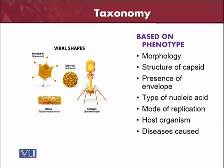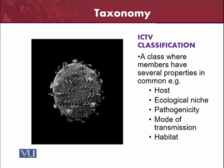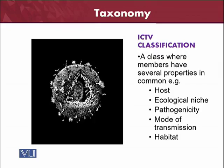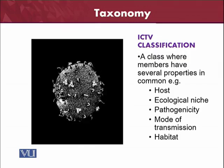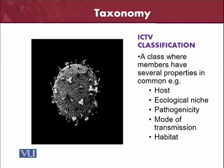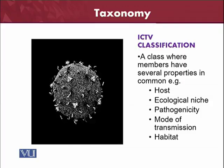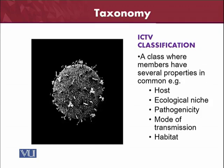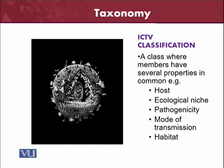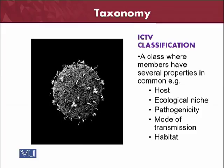We have already studied that there are two kinds of classification systems: ICTV and Baltimore. The ICTV classification system was started in 1966, and in this system different virus members that share several common properties are placed in one class. For example, it may be the host organism — different viruses attacking similar kinds of hosts are grouped together.